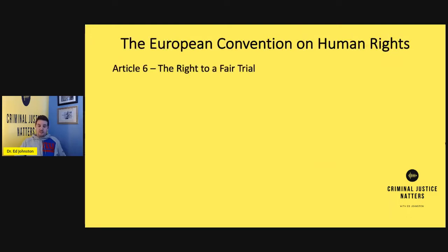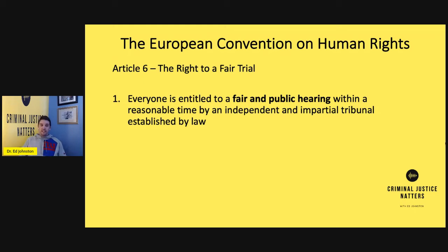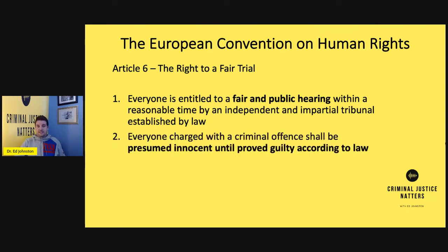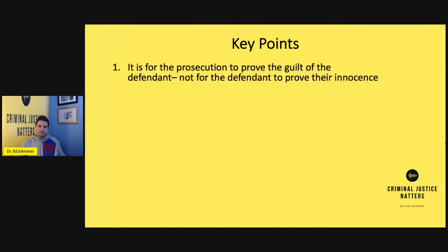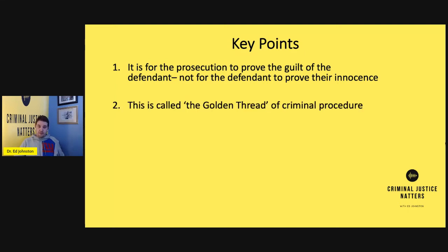The European Convention on Human Rights governs our fair trial rights. Under Article 6, everyone is entitled to a fair and public hearing within a reasonable time by an independent and impartial tribunal established by law, and everyone charged with a criminal offence should be presumed innocent until proved guilty according to the law. So that presumption of innocence is enshrined in our human rights. It's for the prosecution to prove the guilt of the defendant — the defendant does not have to prove their innocence. This is called the golden thread of criminal procedure, and while it comes from a case of Woolmington in England and Wales, it is replicated in other common law systems.